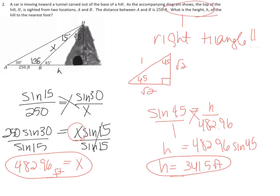Okay, here you have to read the instructions carefully. A car is moving toward a tunnel carved out from the base of a hill. The top of the hill H is sighted from two locations A and B. The distance between A and B is 250 feet. What is the height H of the hill to the nearest foot? I can't do anything with this triangle unless I know this side, because it's the hypotenuse of a right triangle. Once I find that side, I can find H. I know this is 45 degrees, so it's a 45-45-90 triangle.